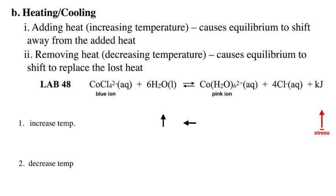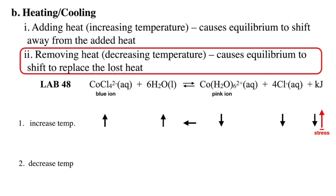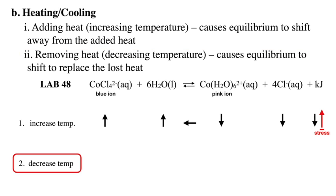Whichever way that arrow points, I have up, up, on the other side down, down, down. And what if I decrease the temperature? So I lower the temperature with like an ice water bath. And I have to replace the heat that I've just lost. And so on that side, up, up, up. Other side, down, down.